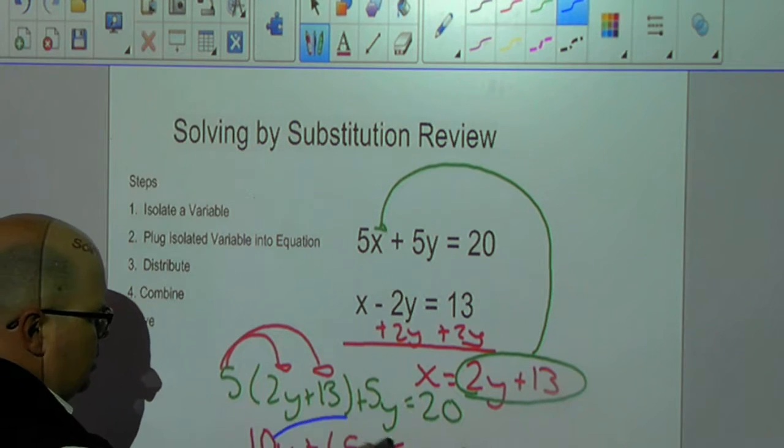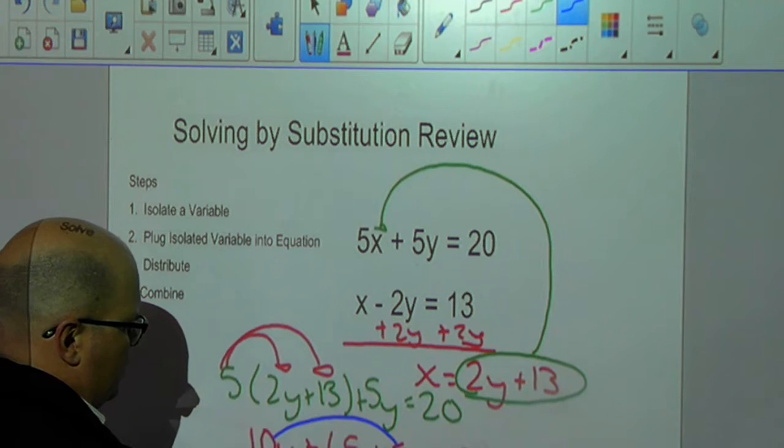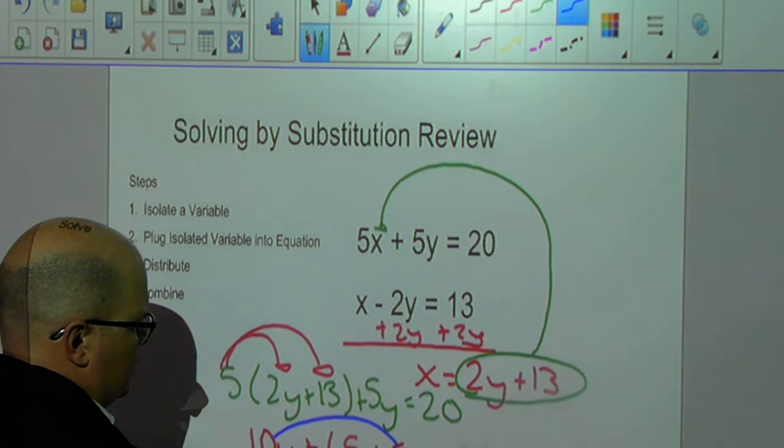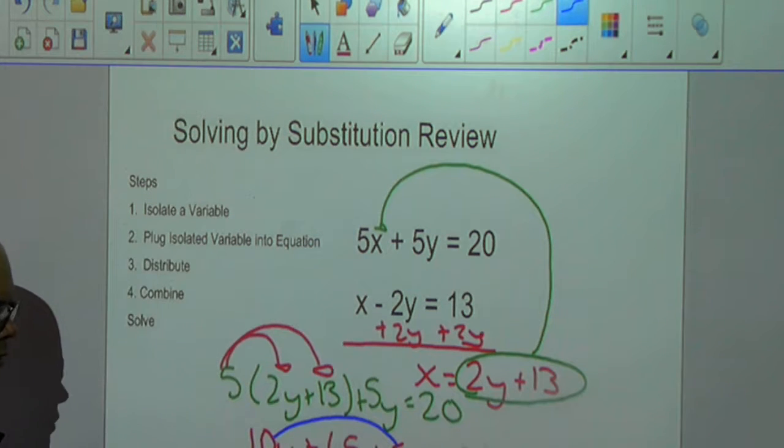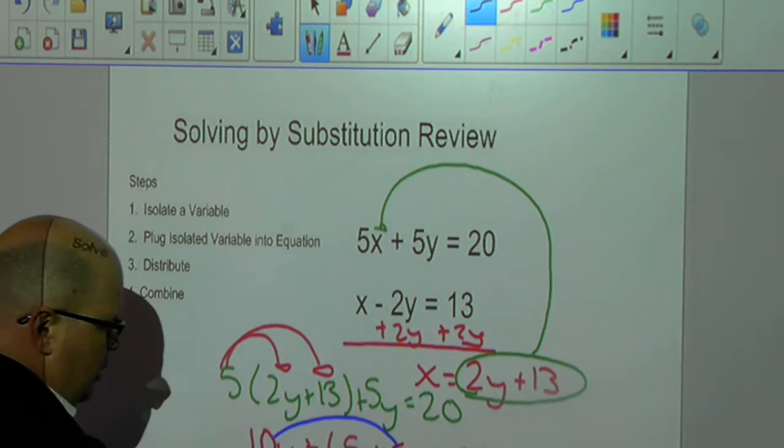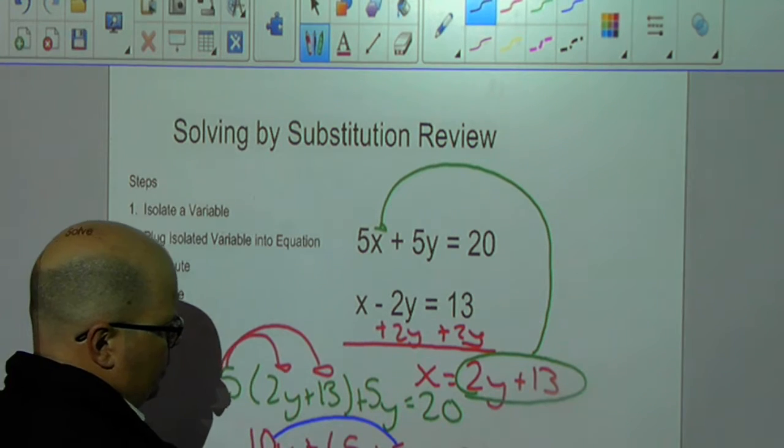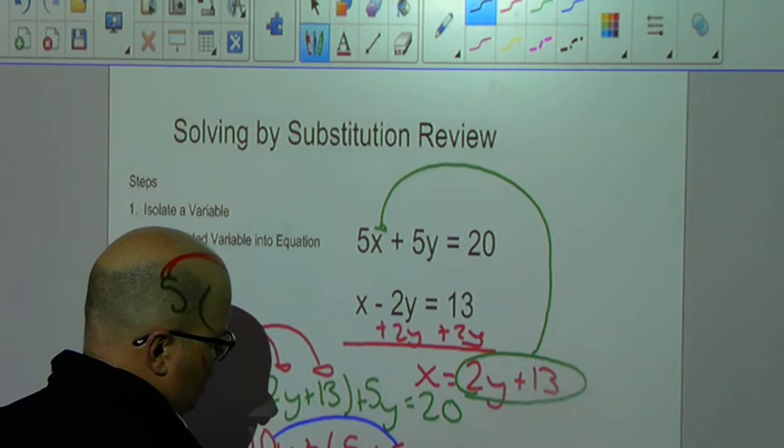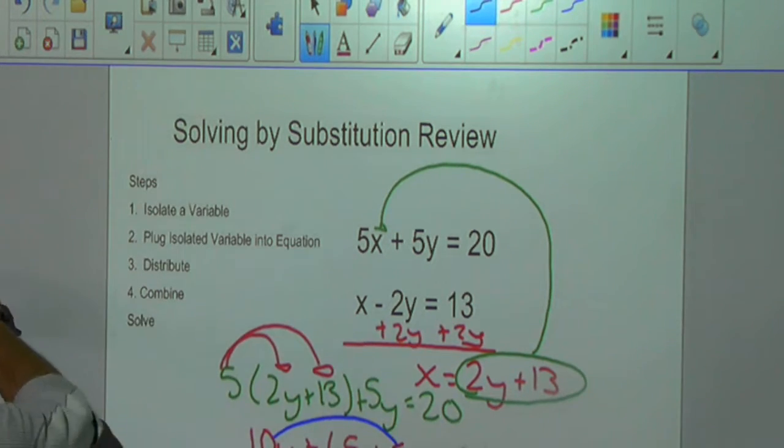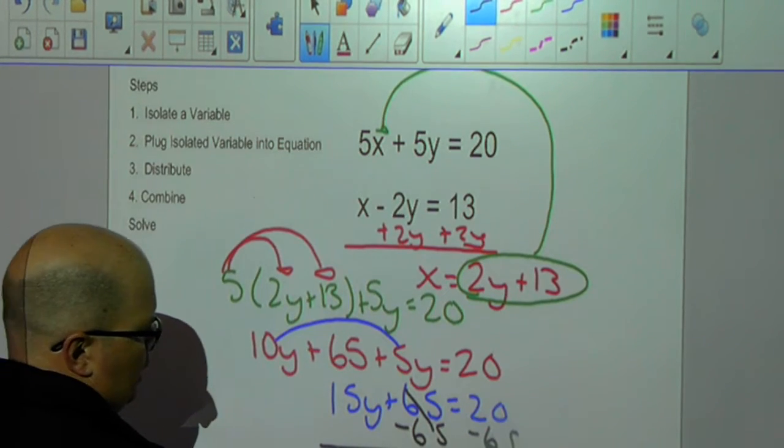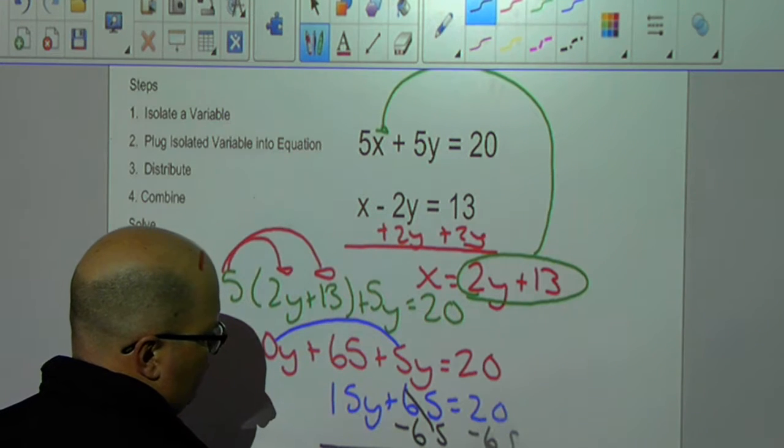I'm going to combine my like terms. So, now I have 15y plus 65 is equal to 20. So, now that I've combined my like terms, I'm just going to solve. I'm going to move my 65 to the other side of the equation. And I'm going to get 15y is equal to negative 45.